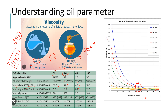To summarize: viscosity is the measure of a fluid's resistance to flow. High-viscosity fluid is difficult to flow; low-viscosity fluid is easy to flow. And viscosity changes with respect to the temperature of the fluid — as temperature increases, viscosity decreases, meaning the fluid becomes easier to flow.